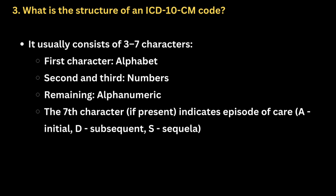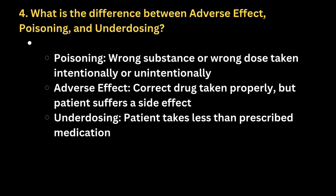The third question is: what is the structure of an ICD-10-CM code? It usually consists of three to seven characters. The first character is always an alphabet, the second and third are numbers, and the remaining characters are alphanumeric. The seventh character, if present, indicates the episode of care — 'A' for initial encounter, 'D' for subsequent, and 'S' for sequela.